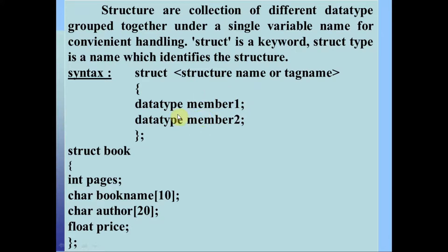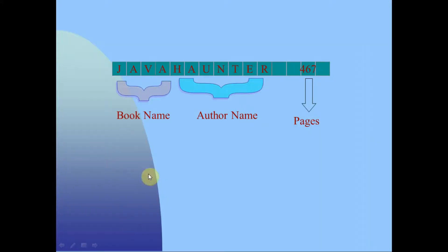For example, the syntax is: struct structure_name, with data type members. For example, struct book where integer is a data type and 'pages' is a data member. Other data members include book name, praise, etc. For example, book name 'Java', another name 'Hunter', pages 467 — data can be continuously stored and accessed.